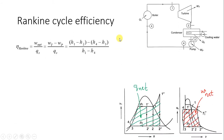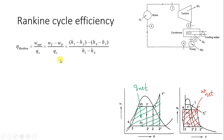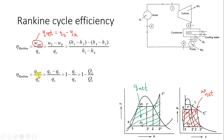W_net is the area under the PV diagram — specifically the area enclosed by the cycle. Similarly, since W_net equals Q_net, Rankine cycle efficiency is Q_net divided by Q_s, which equals (Q_s minus Q_r) divided by Q_s, which equals 1 minus Q_r/Q_s, or 1 minus Q2/Q1. This efficiency formula is analogous to what we saw in the second law of thermodynamics for heat engines.